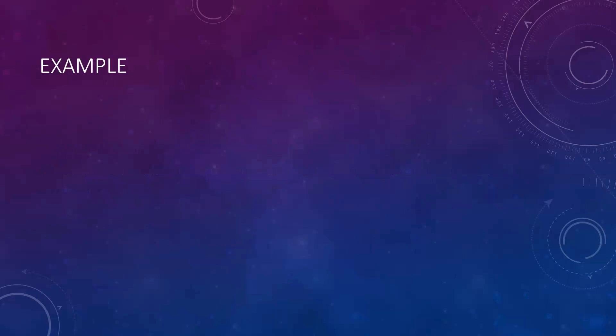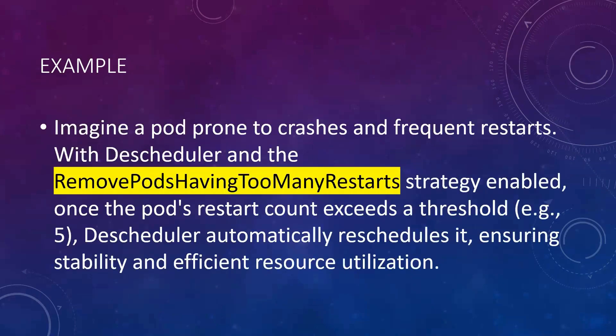Let's look at an example. Imagine a pod that is prone to crashes and frequently restarts. With the descheduler and the 'too many restarts' strategy enabled, once the pod restart count exceeds the threshold — say five — the descheduler automatically reschedules it to a different node, ensuring stability and efficient resource utilization. This helps when, overnight, a pod is stuck due to memory limits hitting OOM errors and keeps restarting without anyone monitoring until the morning.